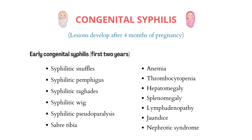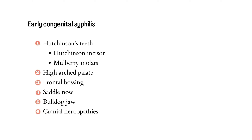Along with the 6 S's, additional features include anemia, thrombocytopenia, hepatomegaly, splenomegaly, lymphadenopathy, jaundice, and nephrotic syndrome. These are features of early congenital syphilis, which occurs in the first two years of birth. We also have specific oral manifestations including Hutchinson's incisors and mulberry molars.